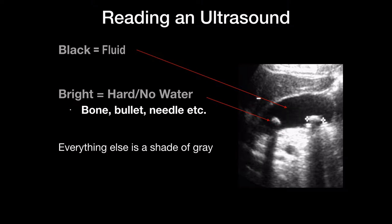Here's an example. Black on ultrasound is fluid — if you don't remember anything else from today, remember that. This is a gallbladder. There's fluid in it, so that fluid must be bile, because that's the kind of fluid in the gallbladder.